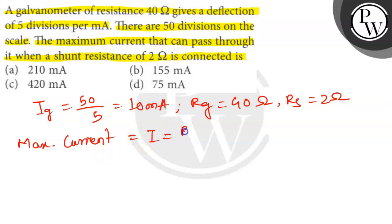I equals Rg plus Rs divided by Rg, multiplied by Ig. Let's put the values. That's 40 plus 2 into 10 divided by 2.